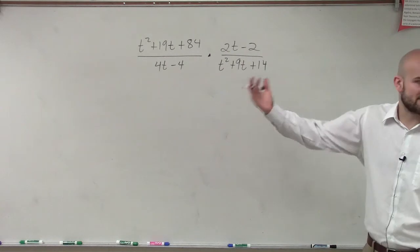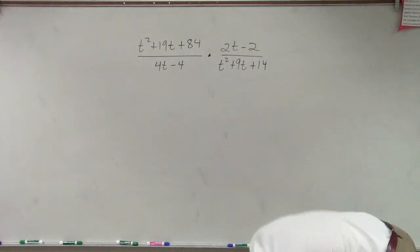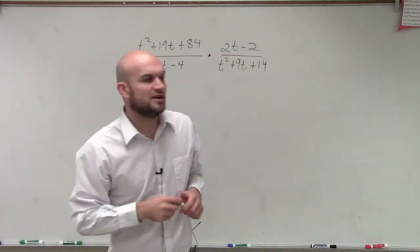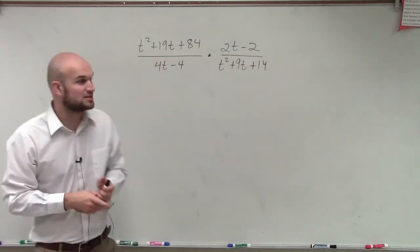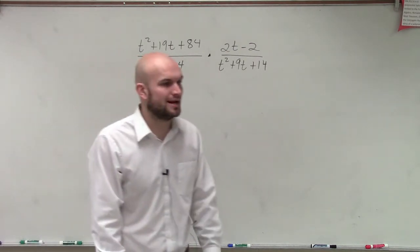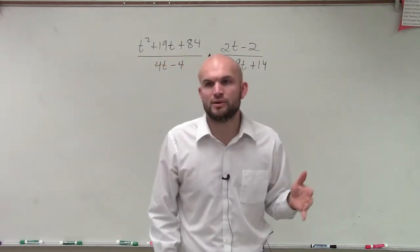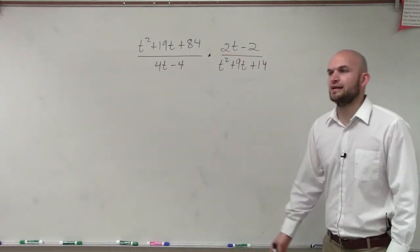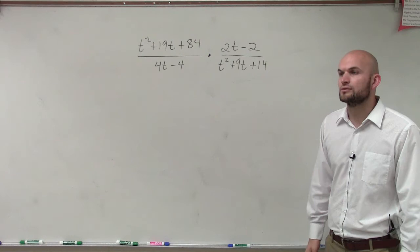Now, what we have is a multiplication problem. And if you guys remember, when you're multiplying fractions, we multiply across, right? But this is a very special case because now what we have are these polynomial expressions as our numerator and our denominator. So before we multiply all the way across, what we're going to want to make sure we do is see if we can cancel out any terms that we're looking for.